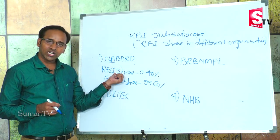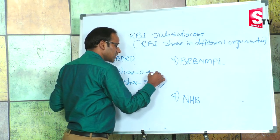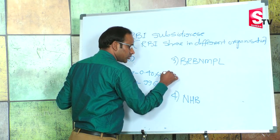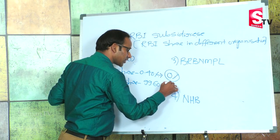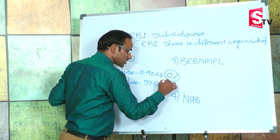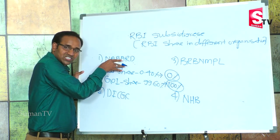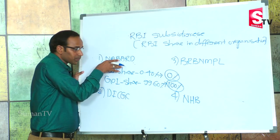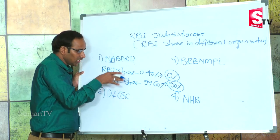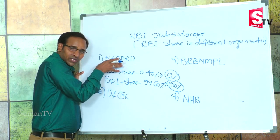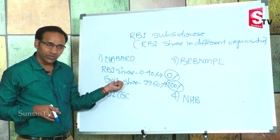NABARD is partially regulated by RBA but fully regulated by the Government of India. Recently, the RBA share in NABARD has been reduced from 0.4% to 0%, and the Government of India share has increased from 99.60% to 100%. So previously NABARD was one of the subsidiaries of RBA, but at present NABARD is not a subsidiary of RBA — it is fully regulated by the Government of India.